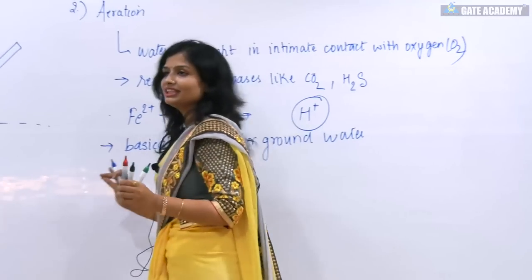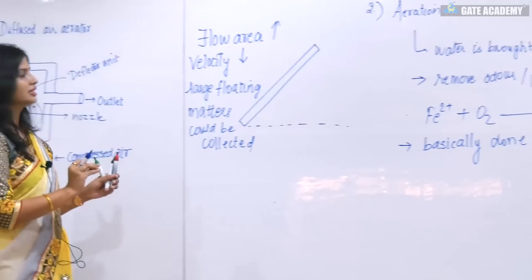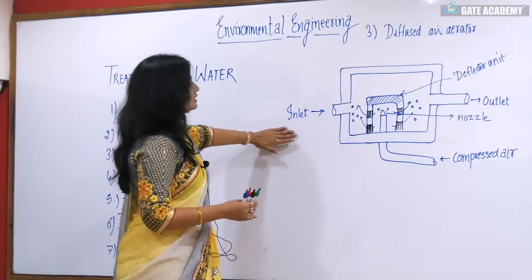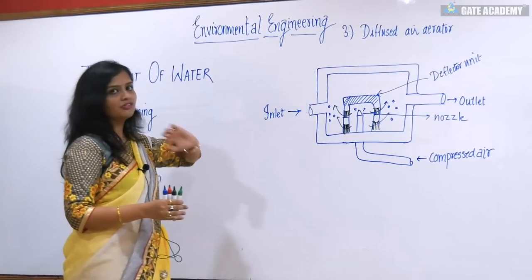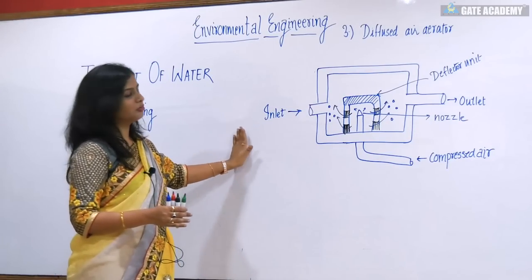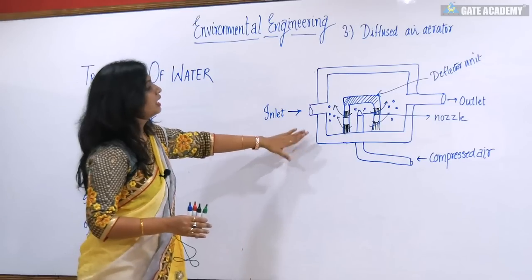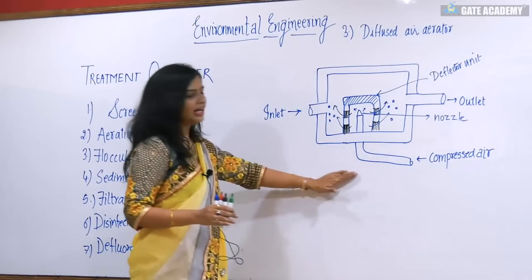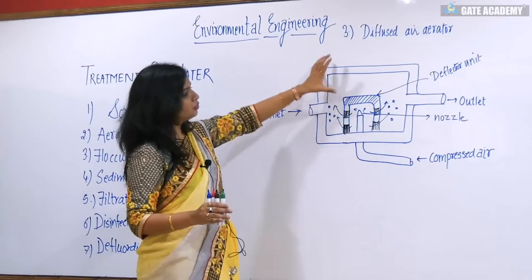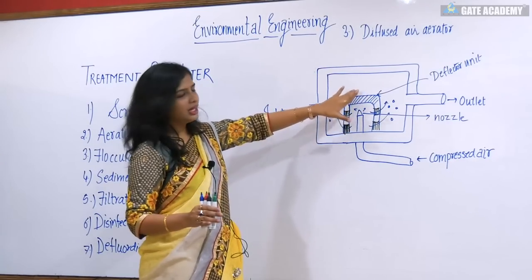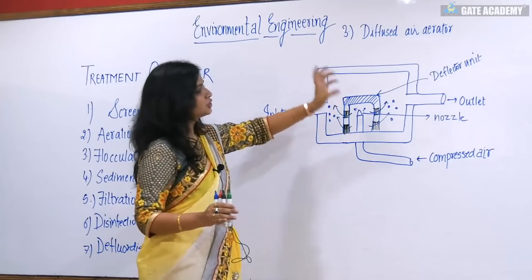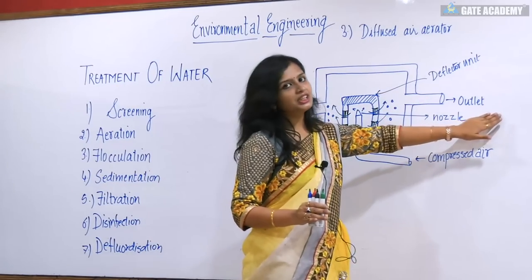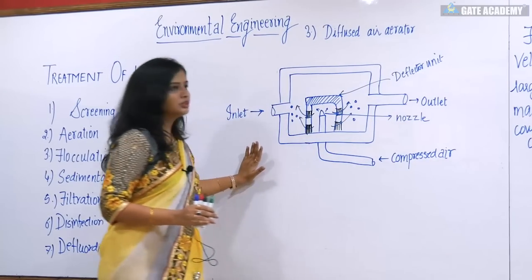Coming back — we discussed the spray nozzle aerator, cascade aerator. Third is the diffused air aerator. The water from which large floating matter has been removed by screening enters through the inlet into a chamber. Compressed air is allowed to flow through, and with the help of a nozzle it is spread through a deflector unit. The compressed air deflects and the water comes in contact with the oxygen, after which it discharges through the outlet.